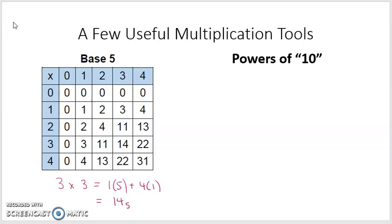Powers of 10 are also useful when multiplying in other bases. They're sort of building upon what you know in base 10. For example, if I have 2 times 10, that's 20. How about 20 times 10? Well that's going to be 2 times 1 plus 2 zeros, which is 200.